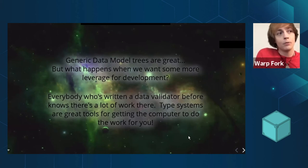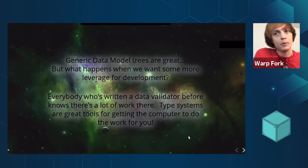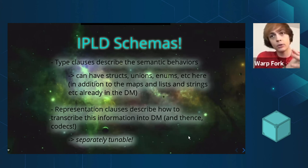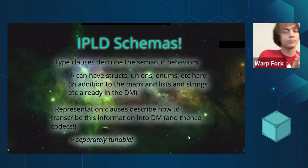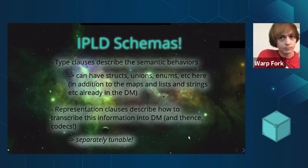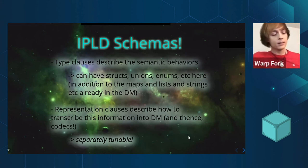For when we want to supercharge our own development and skip over a bunch of manual data validation, we've implemented a schema system. IPLD now has a schema language. You can use it to define types that have semantic behaviors — structs, sum types, unions, enums — things you're probably familiar with from other type systems you've used as a programmer. Combined with this type specification, you can associate a representation clause with the type clause in the IPLD schema language. This describes how information should be transformed in and out of the data model and how individual codecs should proceed to represent it. By making these things separately tunable, we believe you might have some really cool features in your future.